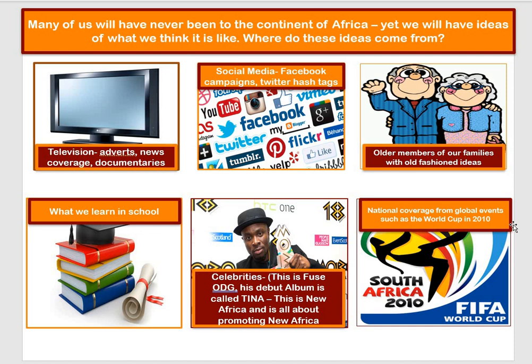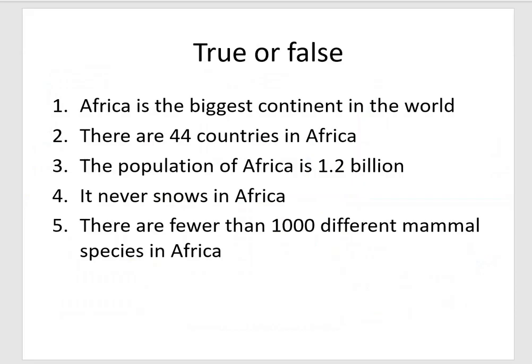Go back to your pen and paper because we've got a true or false activity — five questions. Number 1 to 5 in your margin, just put true or false. Statement one: Africa is the biggest continent in the world. Statement two: there are 44 countries in Africa. Statement three: the population of the whole of Africa is 1.2 billion people. Statement four: it never snows in Africa. Statement five: there are fewer than 1,000 different mammal species in Africa. Pause the video if you need more time, because I'm going to show you the answers now.